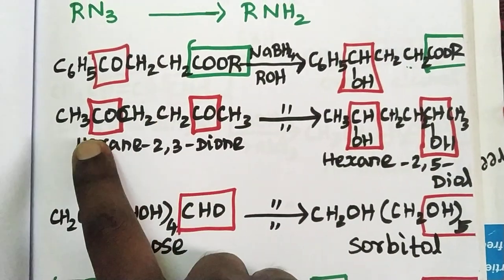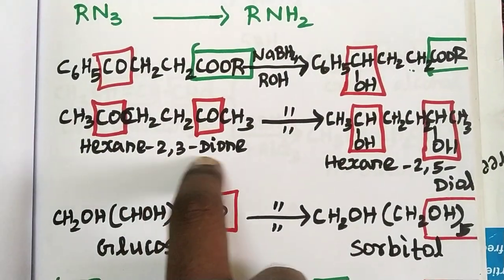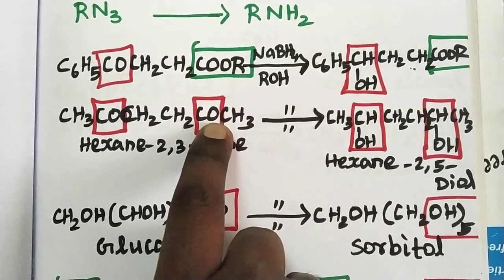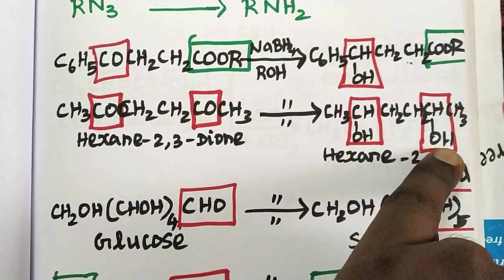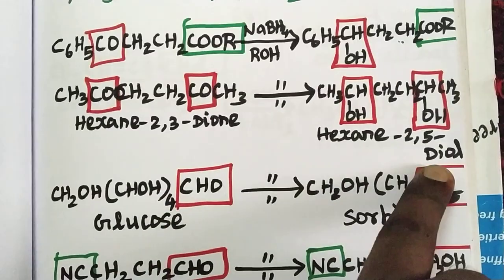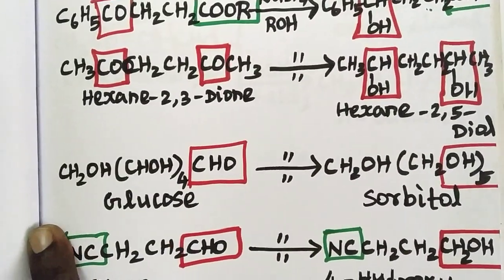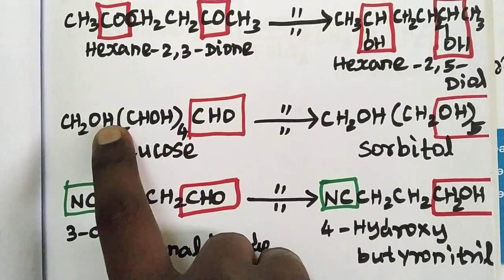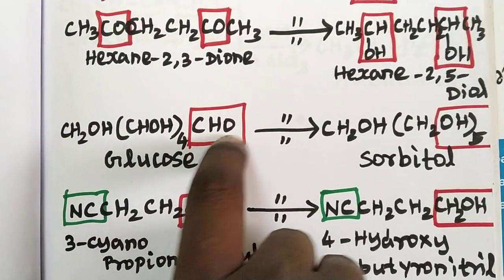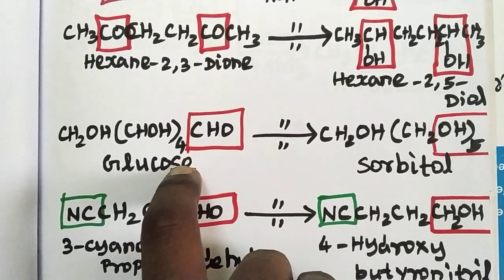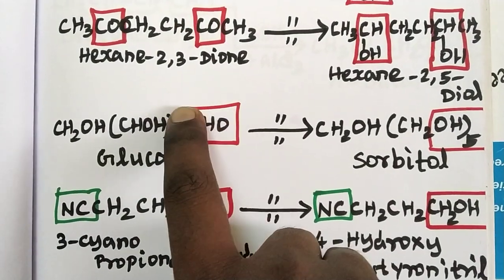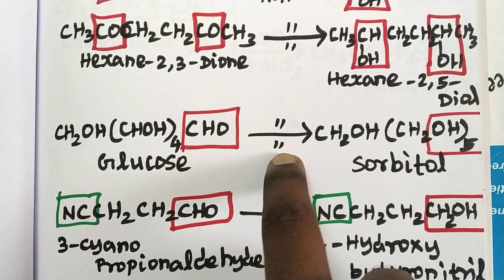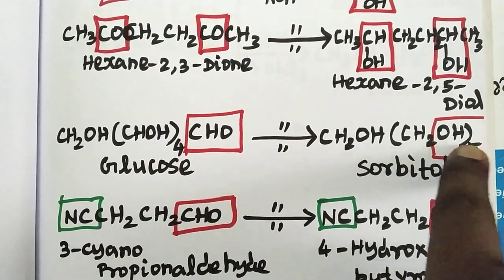The next example is hexane-2,3-dione. There are two keto groups, which are reduced to secondary alcohols, giving hexane-2,3-diol. Now, glucose — you can change it via CH2CHOCH. You can reduce glucose with sodium borohydride; then this should be called an aldehyde functional group.